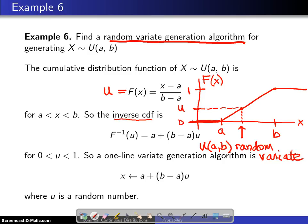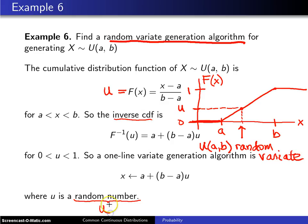And when you see that u is a random number you can think of that random number as a uniform zero one. They mean the same thing. Random number and uniform zero one are the same.